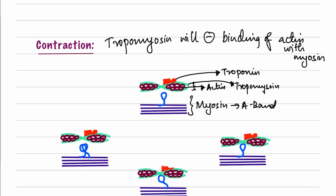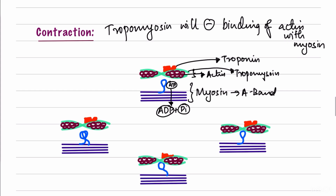For contraction to begin, an ATP molecule binds to the myosin head and is hydrolyzed into ADP plus inorganic phosphate. These two molecules remain adhered to the head of myosin. By this hydrolysis, the myosin adopts a more perpendicular position — the head of myosin remains perpendicular, ready for the next step.